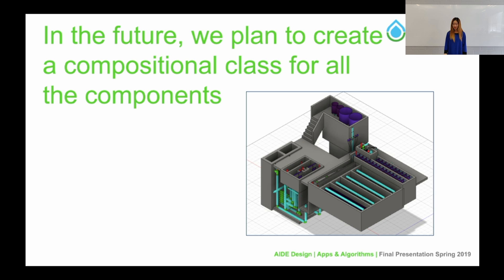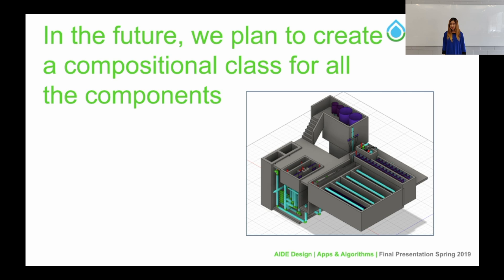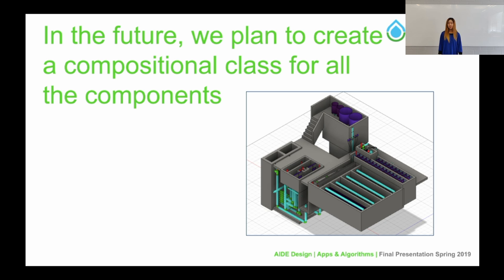Looking to the future, we plan to create a compositional class to put together all of the plant components we have created so far. This means placing objects within other objects, as opposed to inheritance where we pass down fields and create subclasses — for instance, a sedimentation tank bay is within the sedimentation tank class. We would also need to pass down expert input fields. The plant class in general would allow us to look at the entire plant as a whole, which is beneficial because different components depend on each other — for example, the entrance tank and the flocculator are closely related and rely on each other.